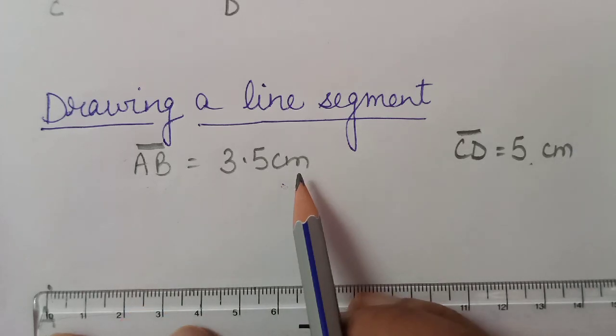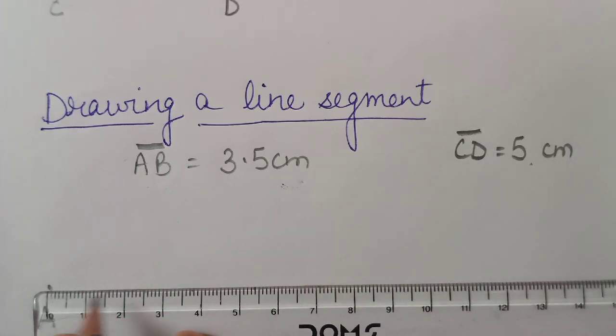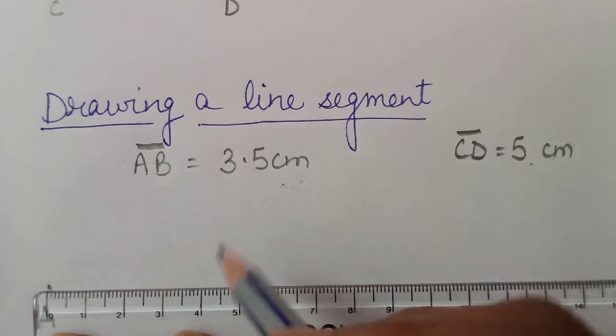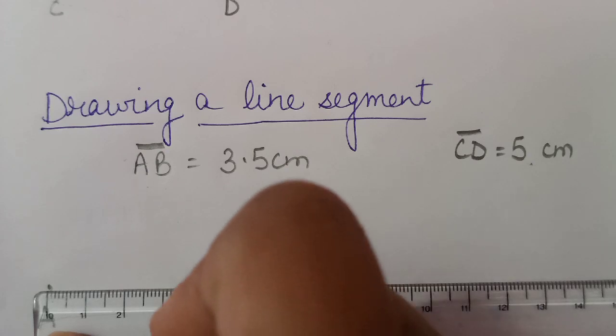3.5. Now, just see in the scale. 1, 2, 3. This is 3. After that, 1, 2, 3, 4, 5. So, 3.5 is here.